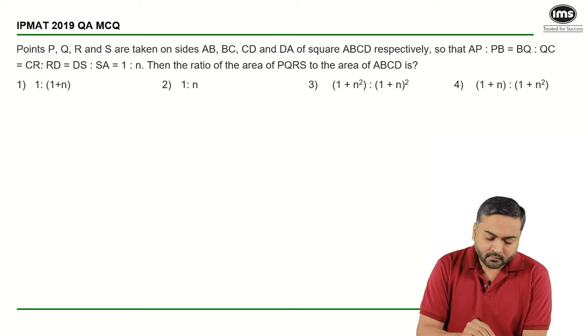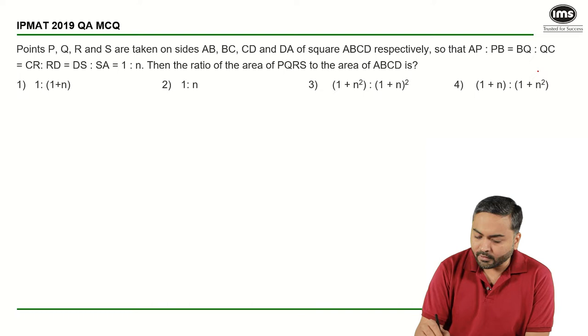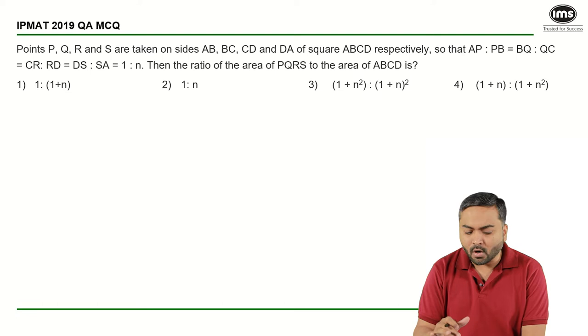It is given to us that P, Q, R and S are taken on the sides of a square respectively so that these ratios are equal to 1:n and the ratio of the areas of PQRS to the area of ABCD is asked.